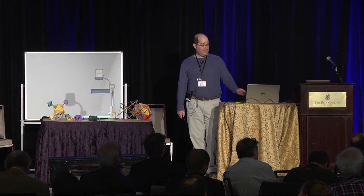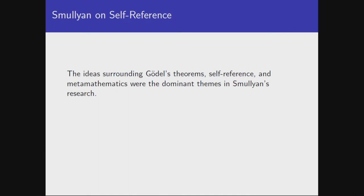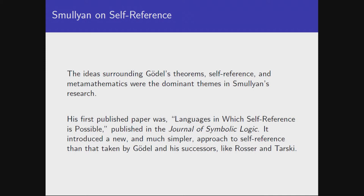These are the ideas that basically animated all of Smullyan's mathematical research: the ideas of self-reference, the underlying ideas in Gödel's theorems, and the relationship of all of this to meta-mathematics. In fact, the first paper he ever published was called 'Languages in Which Self-Reference is Possible.' The accomplishment there was that he devised a much simpler approach to the whole topic of self-reference than Gödel himself used, or successors of Gödel like Rosser and Tarski. He also wrote two especially important technical books: one called simply Gödel's Incompleteness Theorems, and another called Recursion Theory for Meta-Mathematics. And every time I look at that title, Recursion Theory for Meta-Mathematics, that just looks really exciting to me.